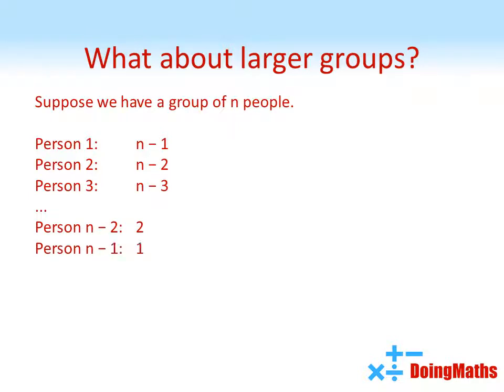The penultimate person's got one handshake left. And by the time we get to the last person, they've already shaken hands with everybody else. So to get our total number of handshakes, we're going to add all of these together to give us n minus 1, add n minus 2, add n minus 3, so on and so on until we get to 2, add 1.